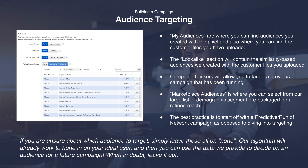Now in the audience section there will be a couple of options to choose from. Firstly, my audiences — this is where you can find audiences created from the pixel and where you can find customer files you may have uploaded, for example to target an email list. Next, the lookalikes section contains similarity-based audiences we can create from customer files you upload. Next we have campaign clickers, which allows you to target users from a previous campaign running on our platform. And lastly, marketplace audiences, where you can select from our large list of demographic segments pre-packaged for a refined reach.